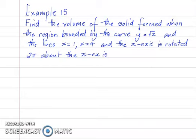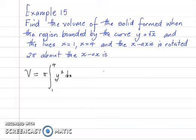Example 15: Find the volume of the solid formed when the region bounded by the curve y = √x, the lines x = 1, x = 4, and the x-axis is rotated 2π about the x-axis. So the volume would be V = π times the integral from 1 to 4 of y² dx. We know that y = √x.